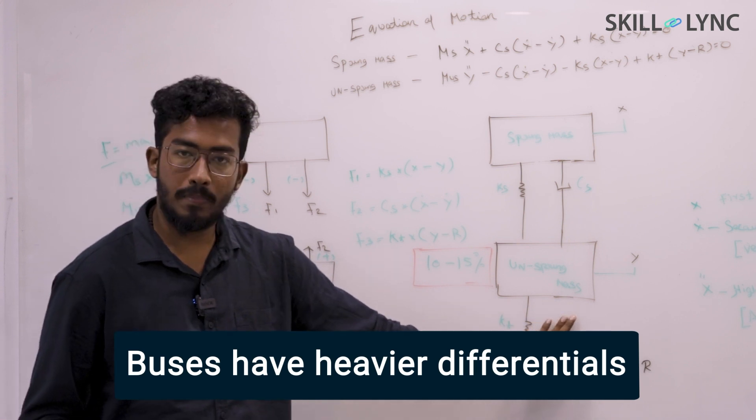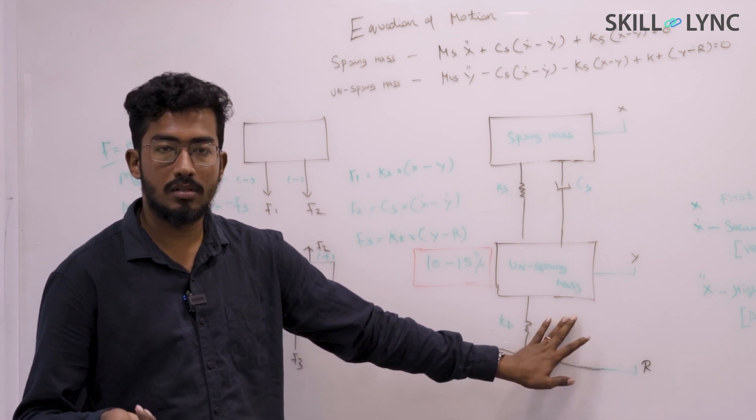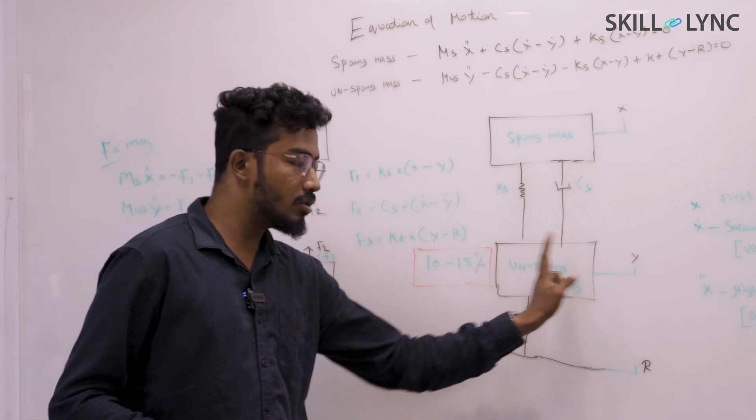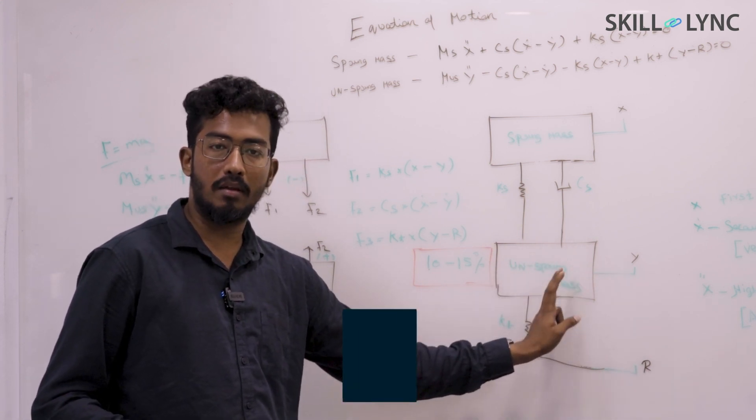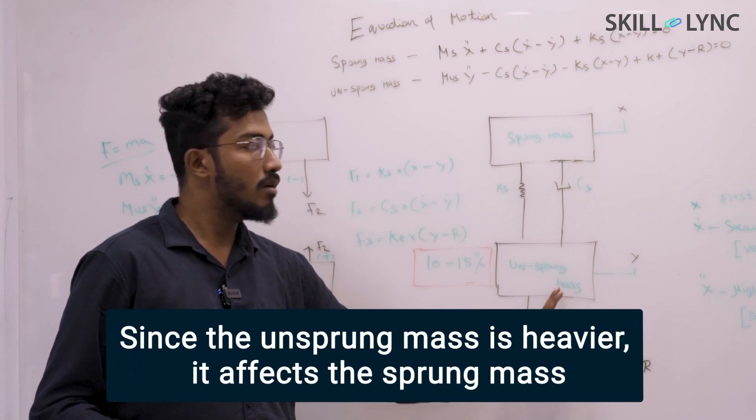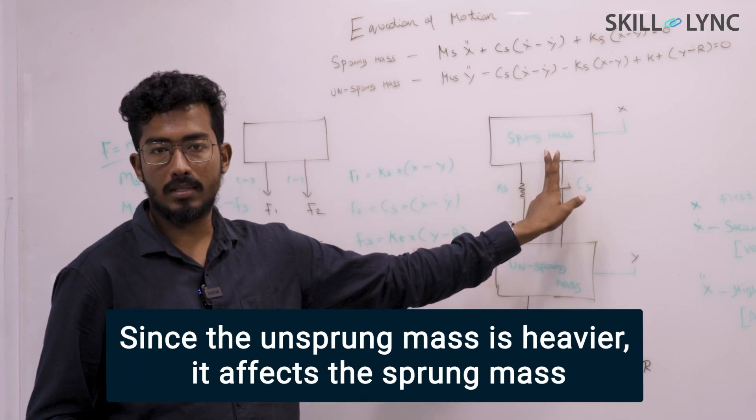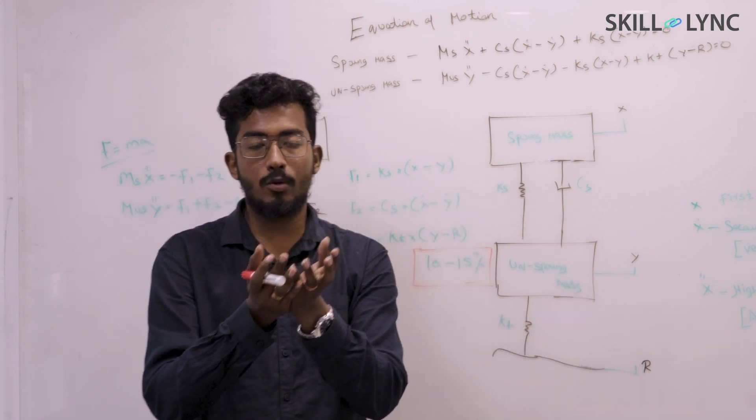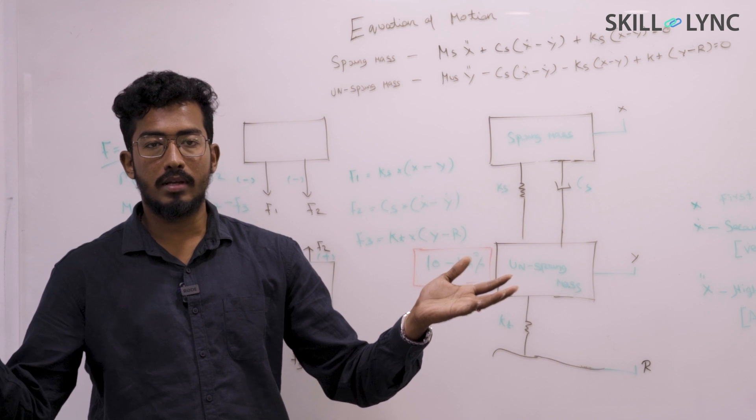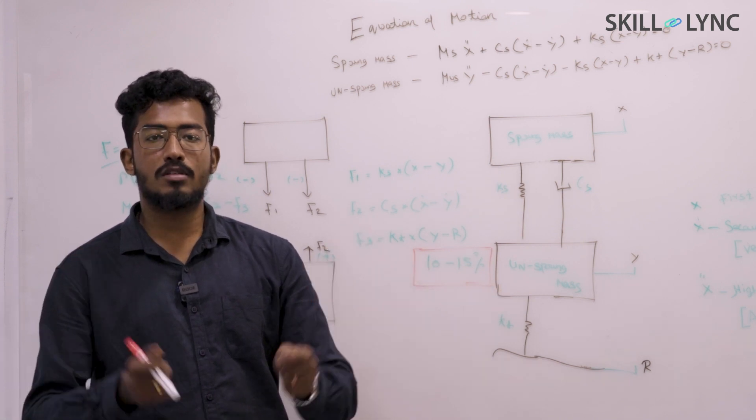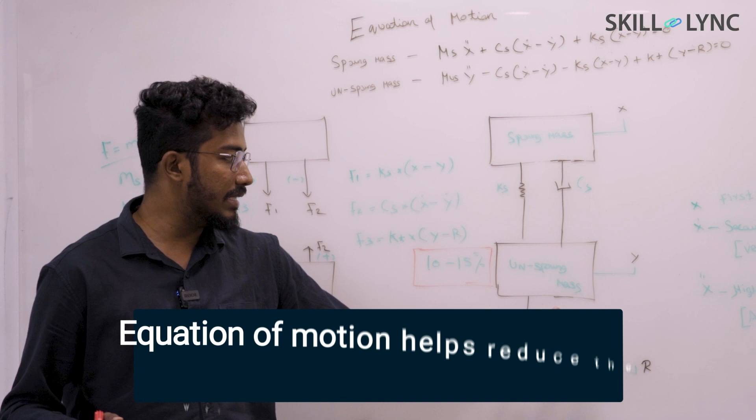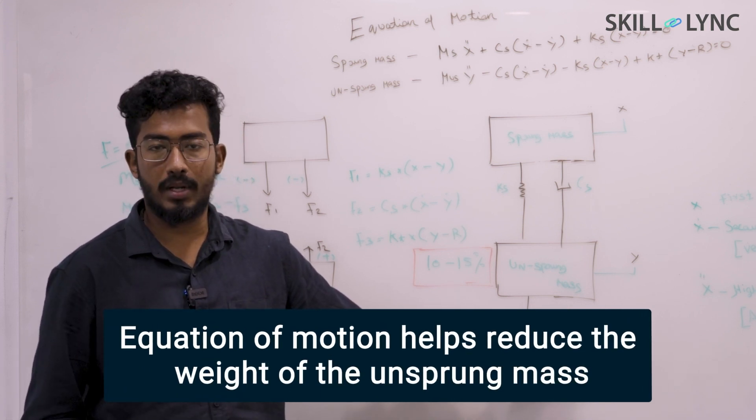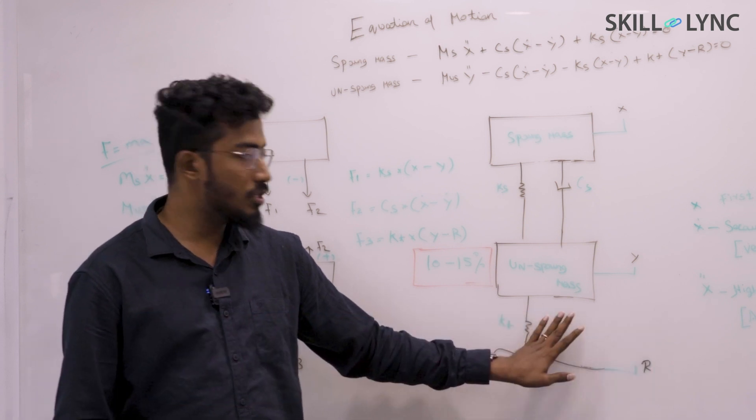What happens now is due to the big bulky differentials, when you get into a speed breaker, because your unsprung mass is comparatively heavier, you disturb the sprung mass. The whole idea is that since you have a big, bulkier differential in the unsprung mass, which is going to be heavier, the whole idea is to decrease the unsprung mass weight, hence you will get a better ride.